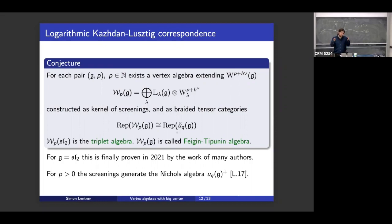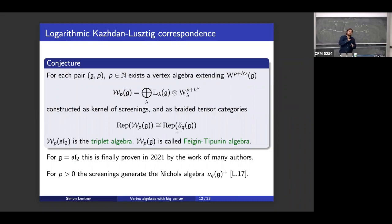Question: is the first half of the conjecture known — that the kernel of screenings exists? No. You can write down the kernel of screenings and with Sugimoto's work maybe know the composition, but you don't even know that it's C2-cofinite, so you don't know you have an abelian category or which modules you have. For the triplet specifically, Adamovic and Milas computed the dual algebra just by hand — there's no general approach for that.